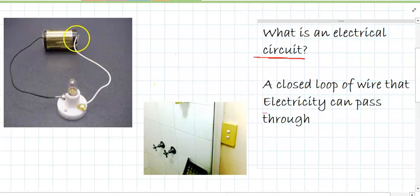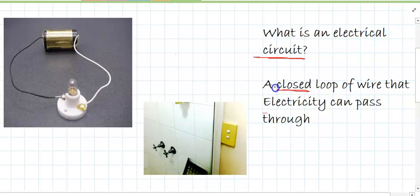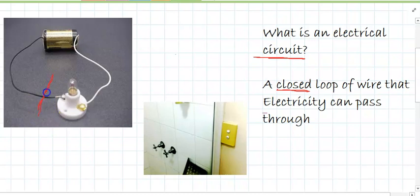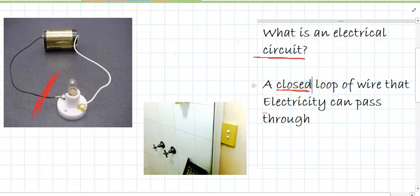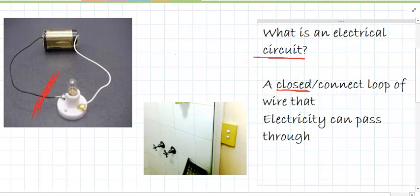Here's a really simple circuit. When we say 'closed,' that means it has to be connected — everything has to be connected together. Because if we got some scissors and cut the wire in our circuit, then we'd call that an open circuit, and electricity can't pass through an open circuit. So it all has to be connected — a closed, connected loop of wire.